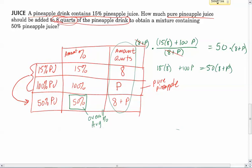I need to get the Ps together. The only way to get the Ps together is if I distribute this. So I'm going to distribute it. 15 times 8 is - holy smokes - well, 4 times 15 is 60, so that's got to be 120. Plus 100P equals 50 times 8 - well, 2 times 50 is 100, so that's got to be 400 plus 50P.